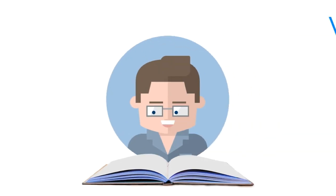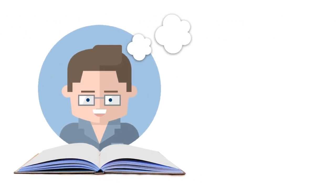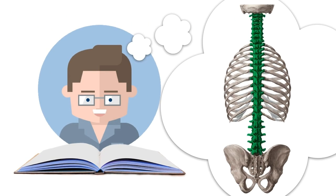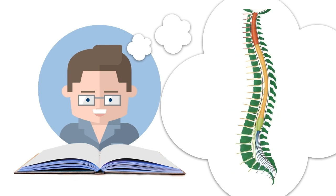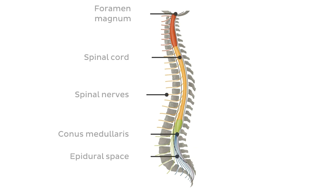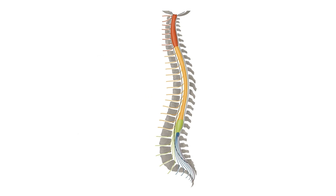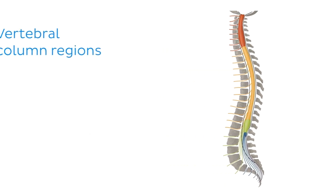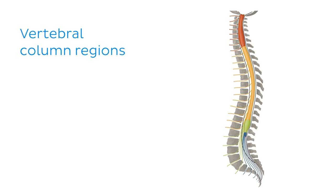So when you think of the vertebral column, or the spine, you've probably imagined something a little like what you can see on your screen right now. Why don't we take a bit of a different spin on it and look at the mid-sagittal section instead? Much better. This makes it a lot easier to understand how the vertebral column relates to other structures. But before we study any of these interrelationships, let's look at the different regions of the spine.